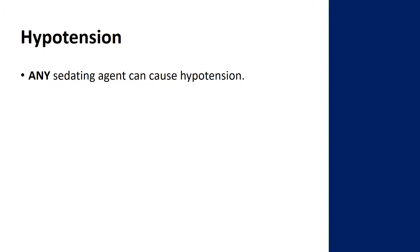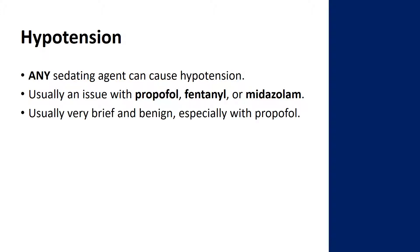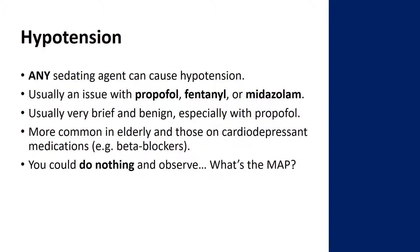So we'll talk about hypotension first. Remember that any sedating agent can give you some hypotension — it doesn't really matter which one you're using, it's always something that's on the table. Most commonly it's going to be an issue with propofol, fentanyl, or midazolam, probably in that order. Usually when you get hypotension, it's very brief and very benign, especially with propofol, and it usually becomes a problem in elderly patients or those taking cardiodepressant medications like beta blockers or calcium channel blockers. When you give somebody a big dose of propofol, it's not uncommon for their blood pressure to go from 130 over 80 down to 95 over 60.